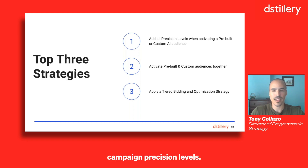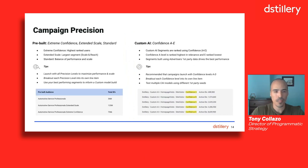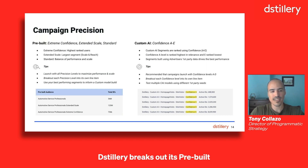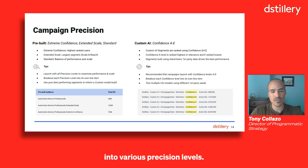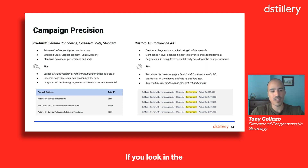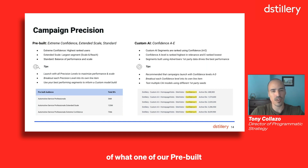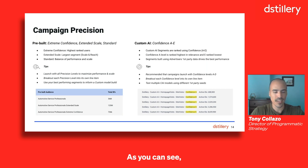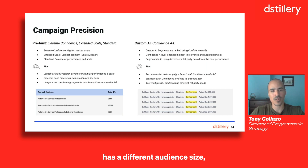Moving on to campaign precision levels. Distillery breaks out its pre-built and custom AI audiences into various precision levels. We do this to really allow you to hone in, optimize, and identify what's working for your campaign. If you look in the lower left-hand side of the screen, there's a great example of what one of our pre-built audiences looks like when broken out into precision levels. As you can see, there are three separate precision levels, each one of which has a different audience size.